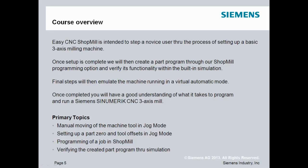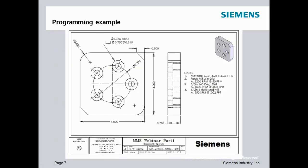Today we're going through basic setup of a 3-axis milling machine, then a simple conversational Shop Mill program, evaluating the cutter path, and simulating it in a virtual mode. Here's the sample part we'll use — we'll face off the top, drill a bolt hole pattern, mill the counterbores (3/4-inch diameter), and profile around the outside of the non-symmetrical shape, which requires an irregular contour rather than a basic canned cycle.